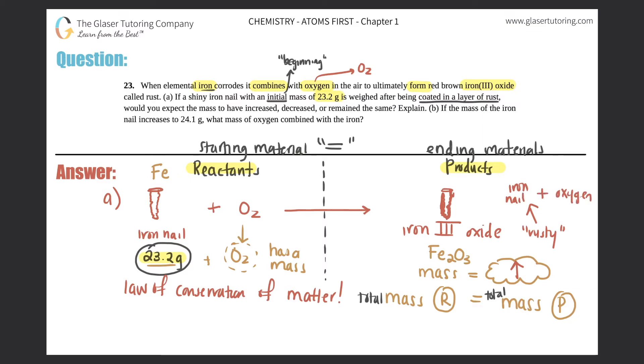So do you think that when it becomes rusty, that the mass would have increased, decreased, or remain the same? It would increase because this rusty material was the iron nail plus the oxygen that it reacted with. That's our final answer for A, because of the law of conservation of matter.